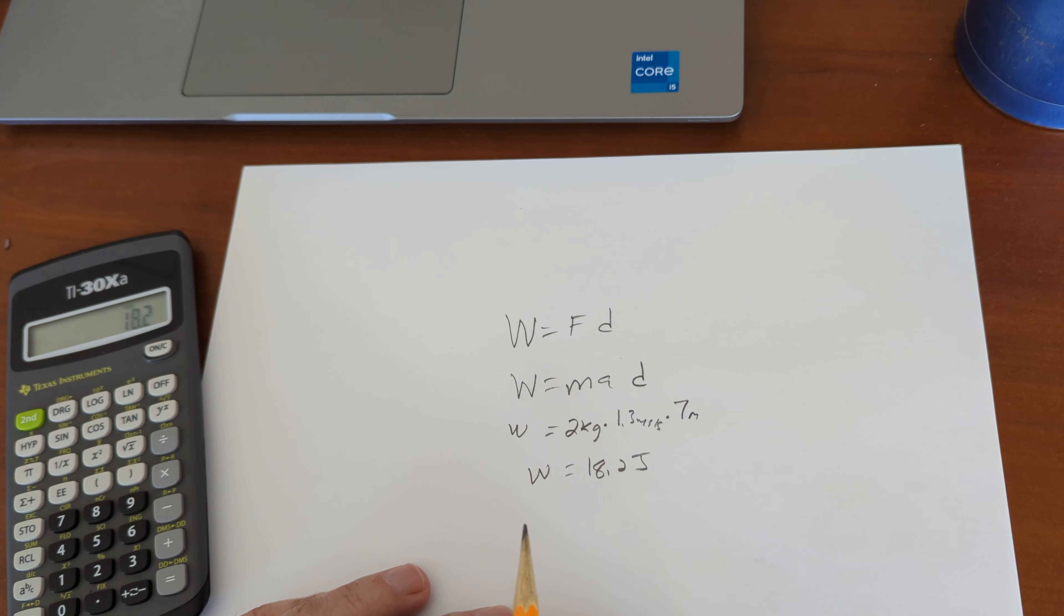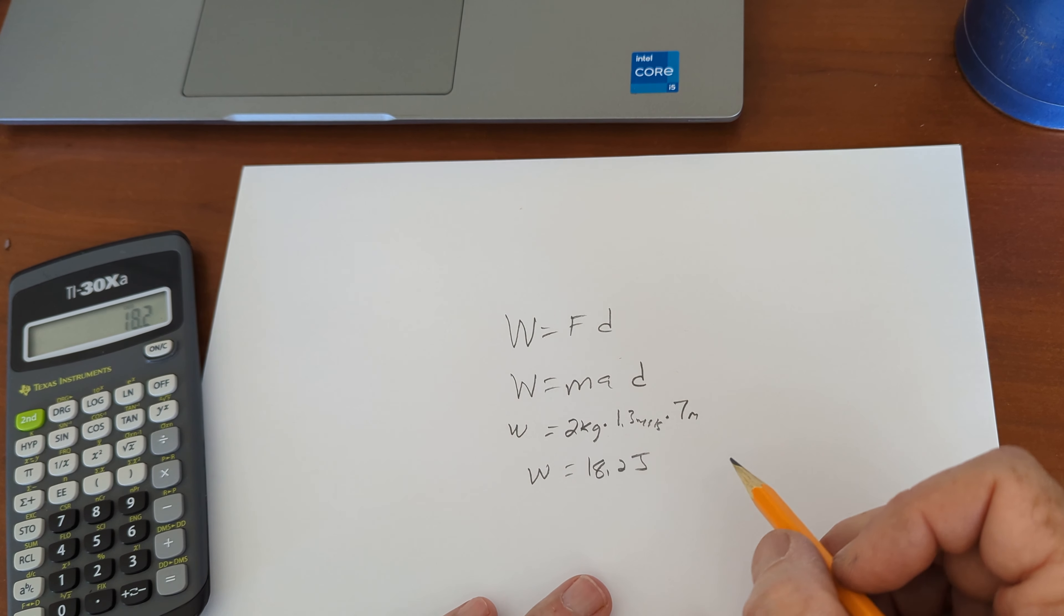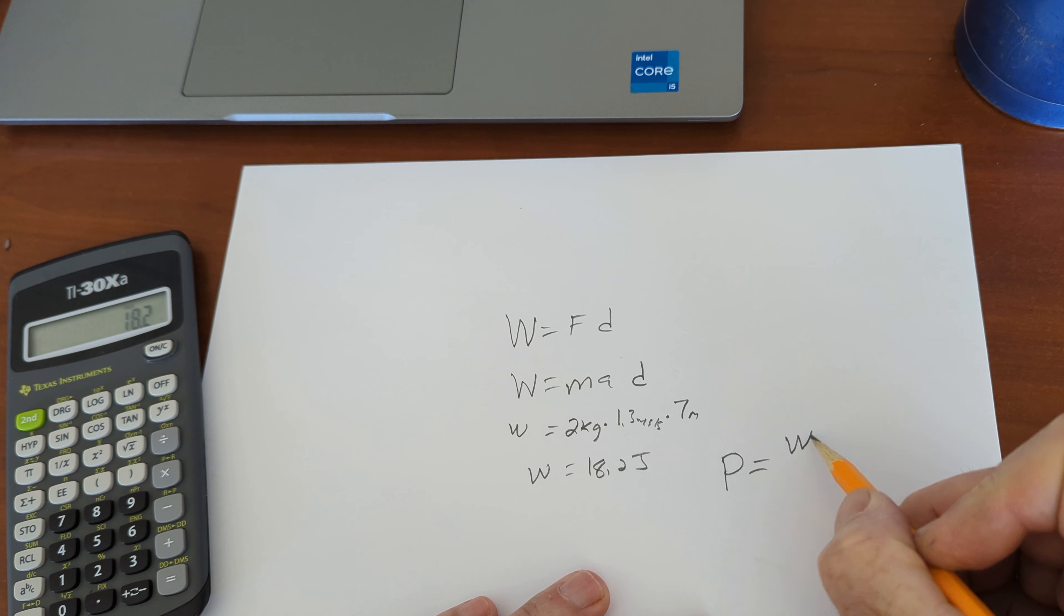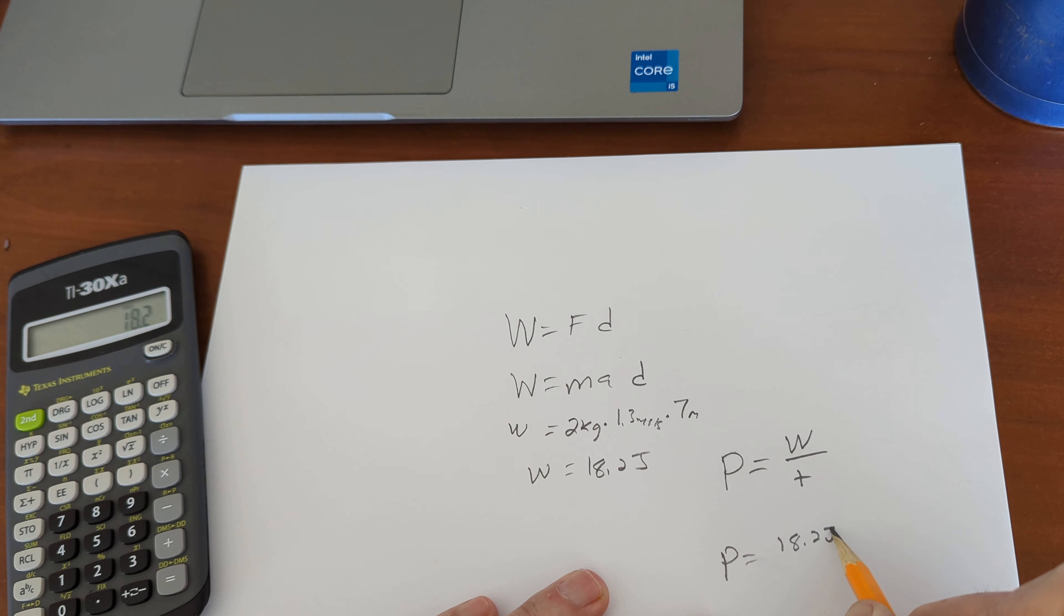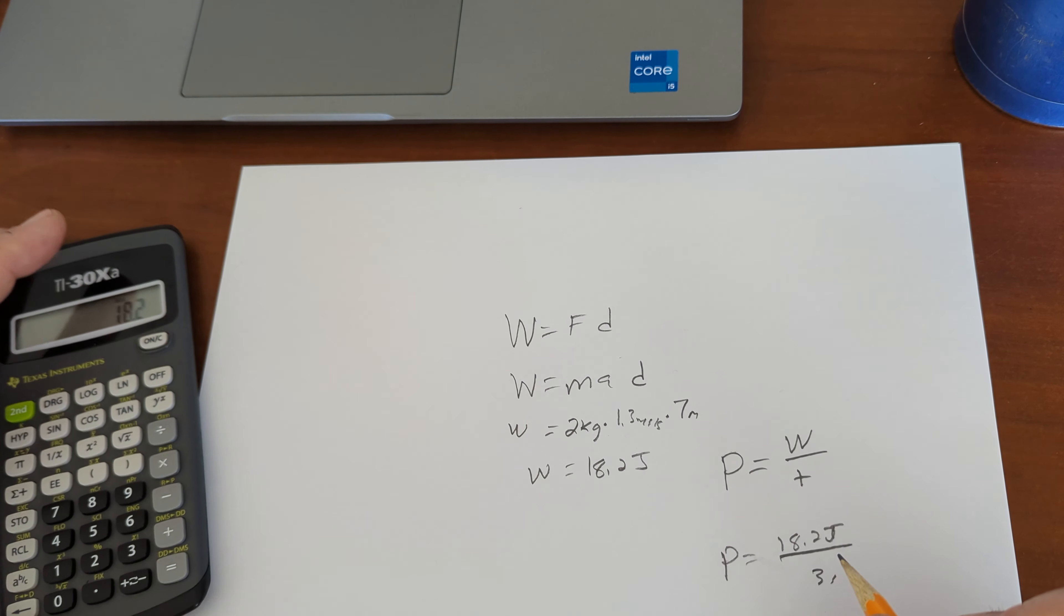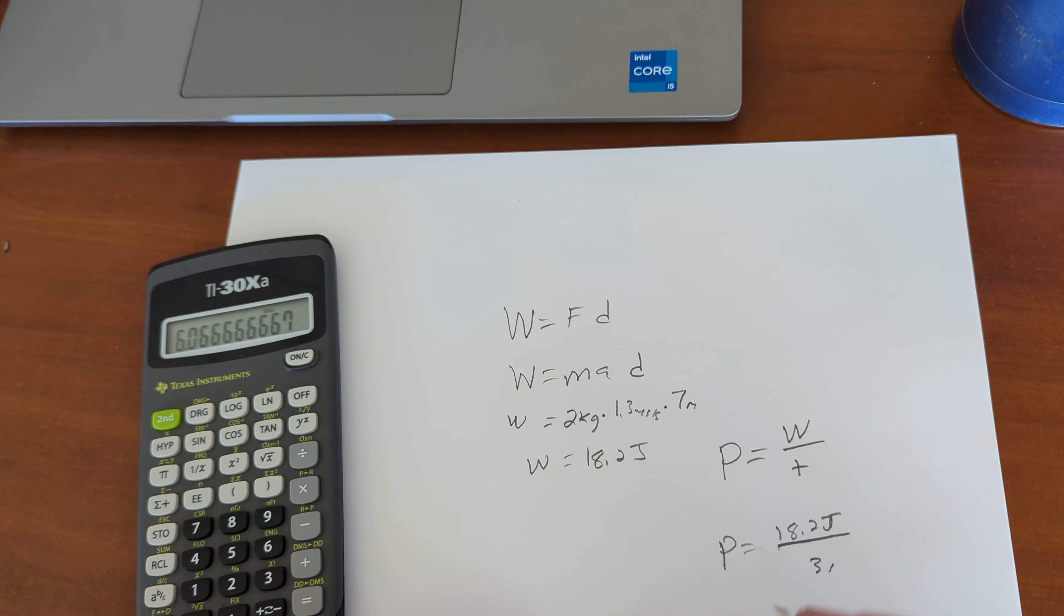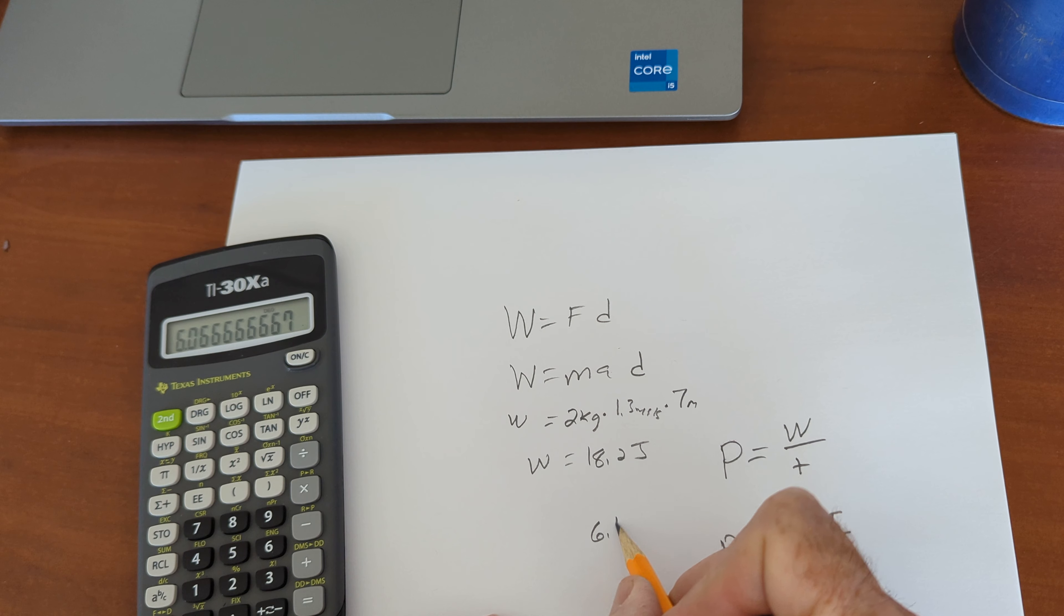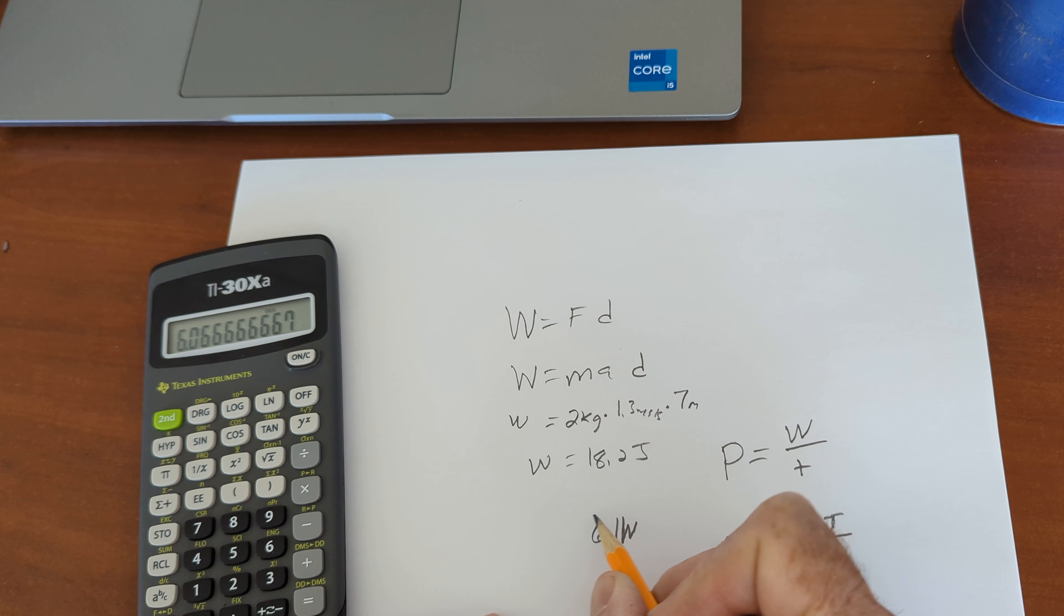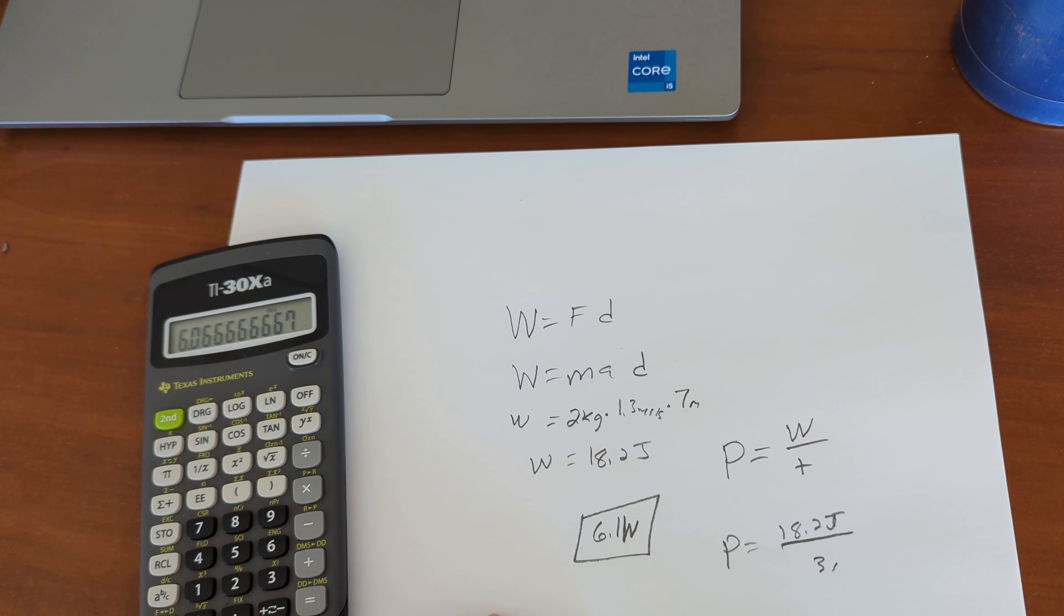But the question says, if it's done in three seconds, how much power was applied? Power equals work divided by time. Power is equal to 18.2 joules of work done in three seconds. Divided by 3. 6.1. 6.07. 6.1 watts. Just put a capital W there.